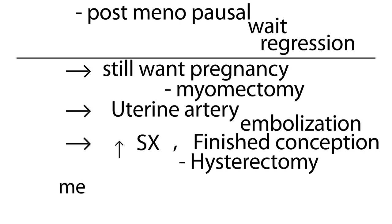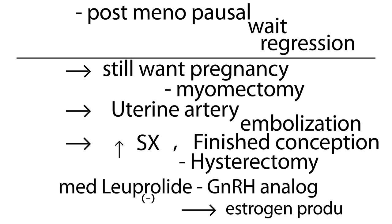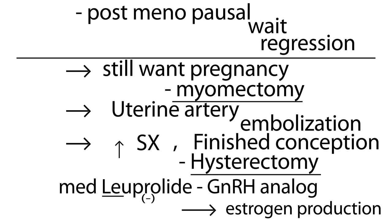One more important thing: there is a medication called leuprolide, a GnRH analog. This medication decreases estrogen production. Because the fibroids have estrogen receptors, when estrogen is reduced, the fibroids shrink — stimulating the receptors causes growth, not stimulating them causes shrinkage. Often this medication is given for a period of time before a hysterectomy or myomectomy, because it is easier to perform surgical procedures once the fibroids have been shrunk as much as possible.